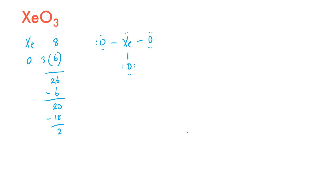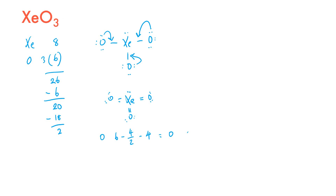Xenon can accept more than 8 electrons, so we add lone pairs from the oxygens to xenon, forming double bonds. This gives a structure with 3 double bonds to oxygen and 1 lone pair on xenon. For formal charges: each oxygen has 6 minus 4/2 minus 4 equals 0. For xenon: 8 minus 12/2 minus 2 gives 8 minus 6 minus 2 equals 0. All formal charges are 0.